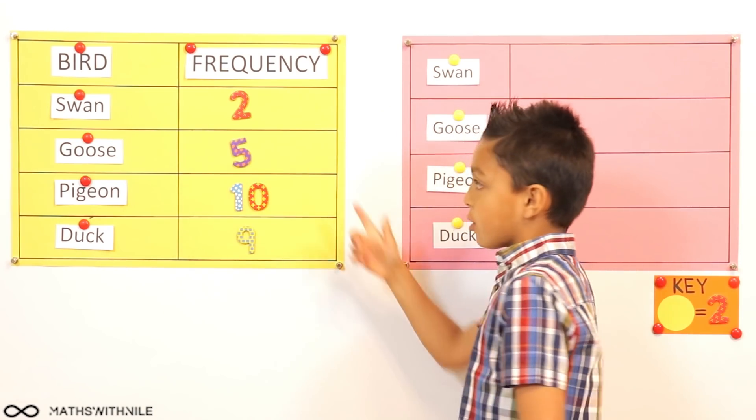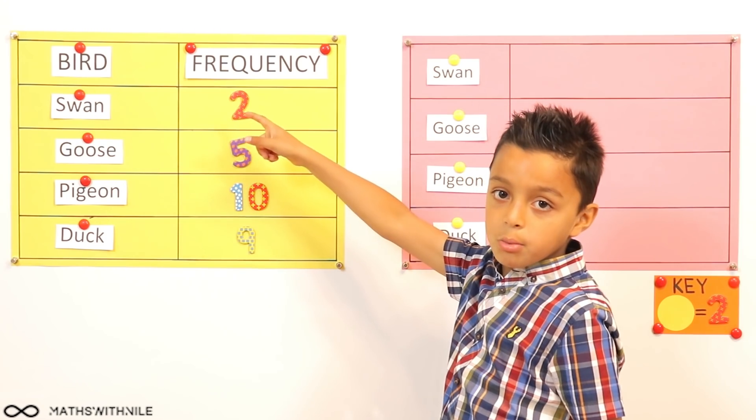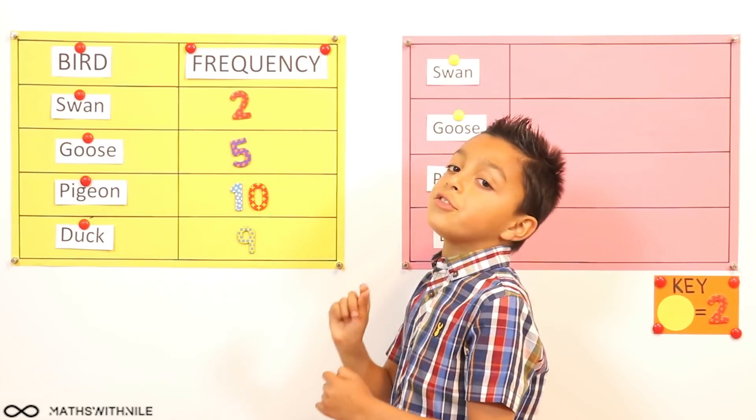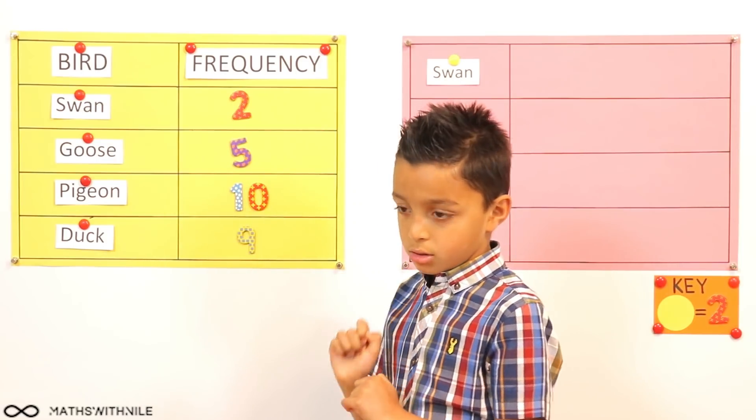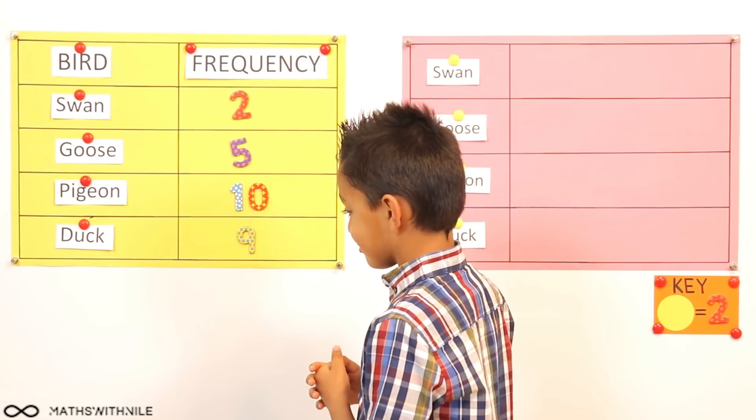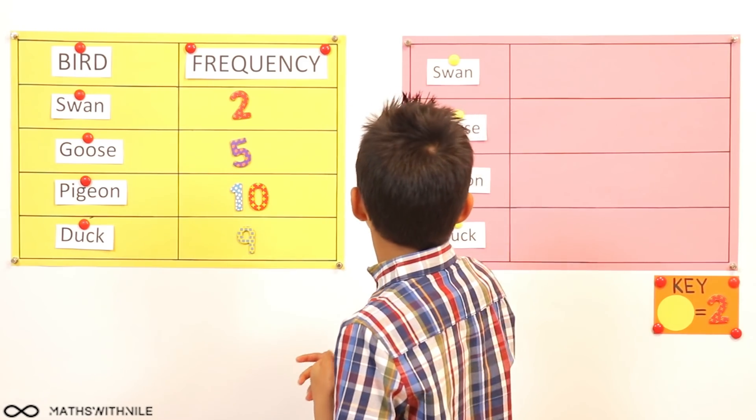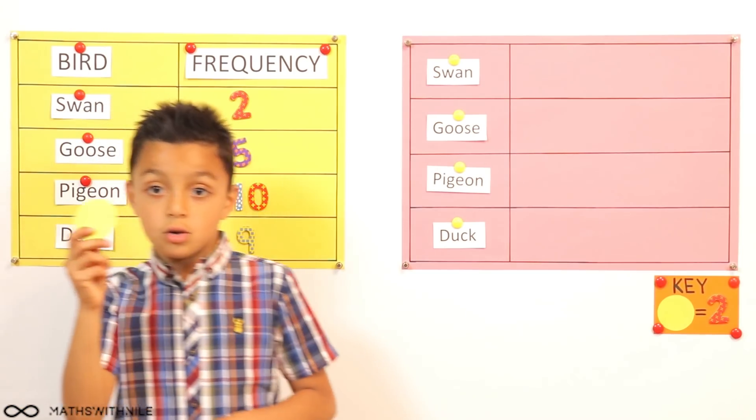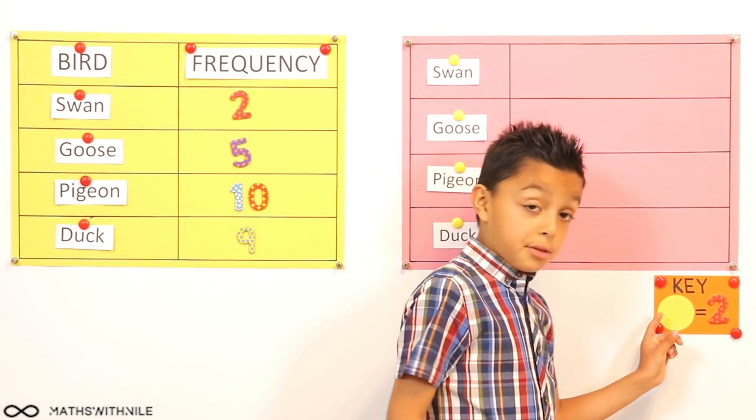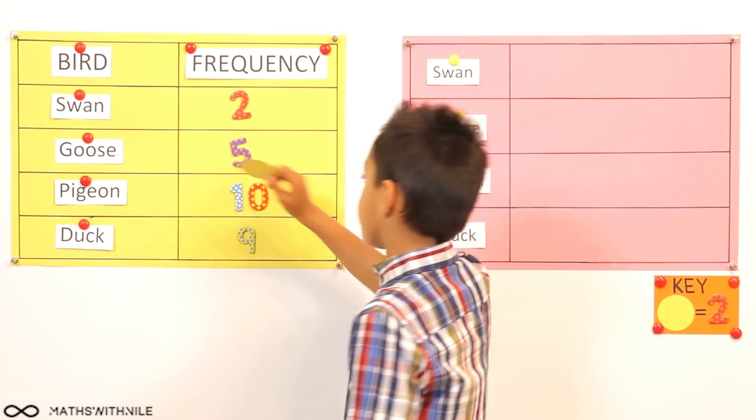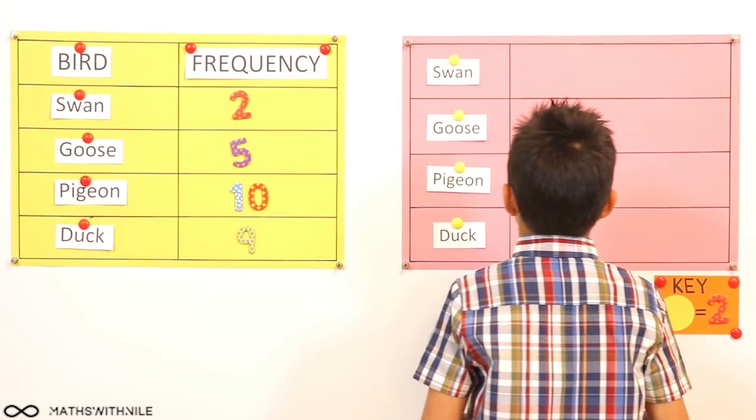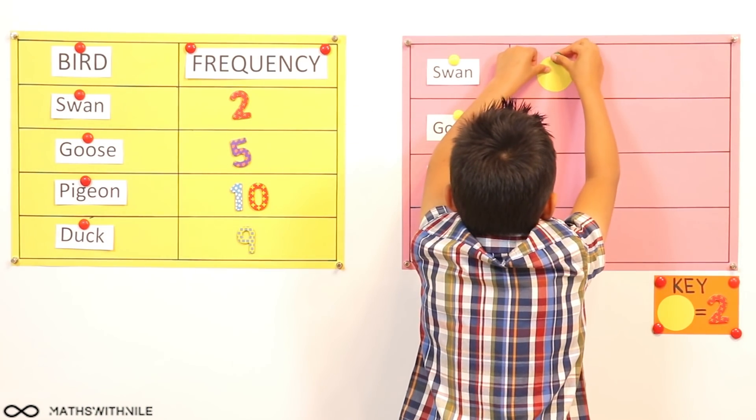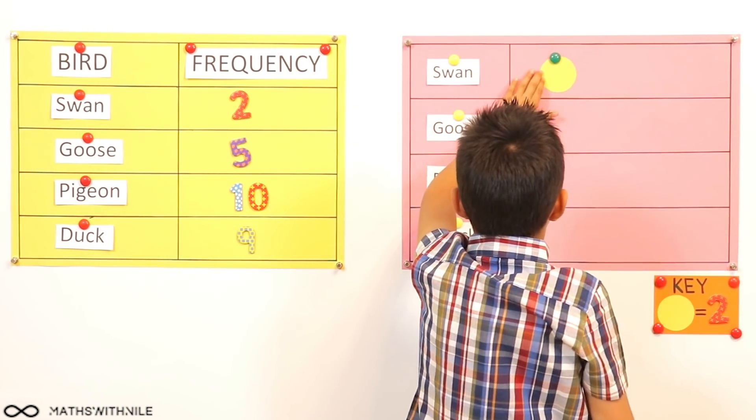Brilliant. So you're going to start filling in that information. And can you explain as you go along what you're doing? So basically, on this one, it says one has two. So now we have to do that, but just using pictures. Okay, so where are you going to start? I'm going to start with the swan. Okay. And I need one circle, because one circle equals two, and there are two swans. Very good.